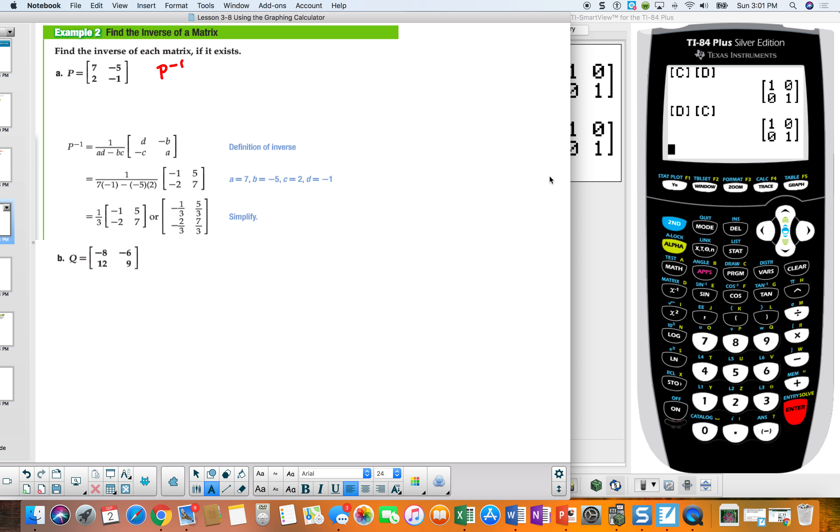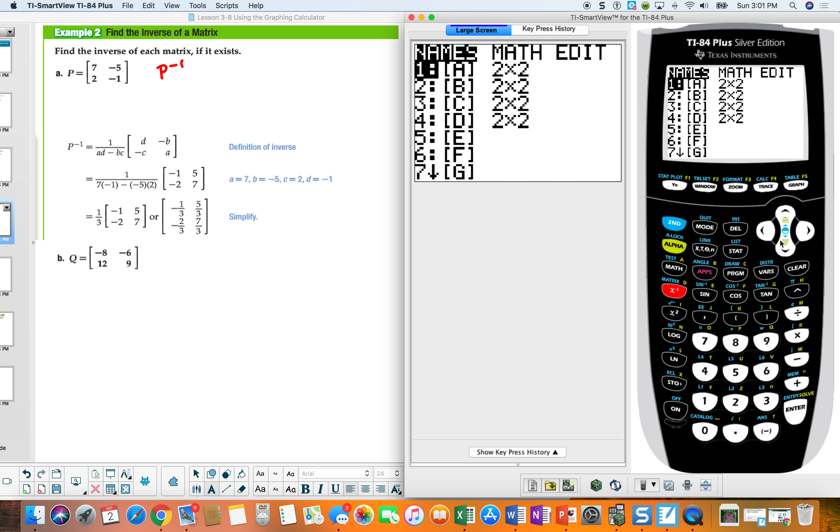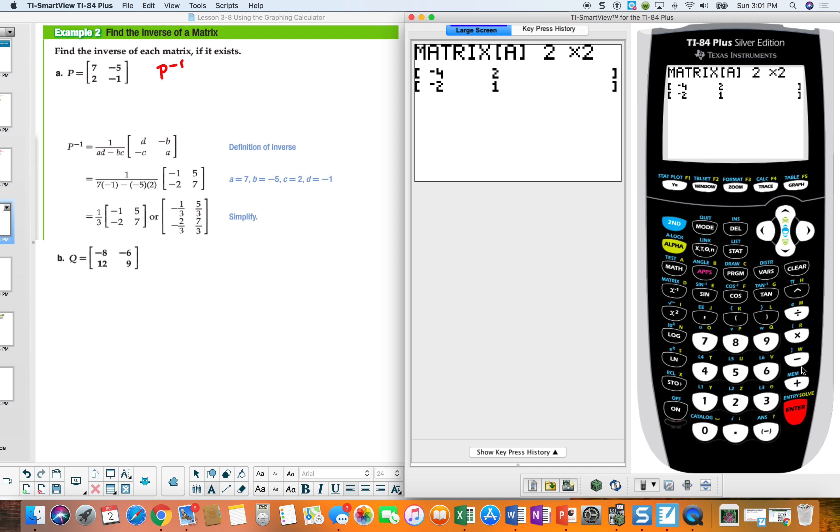Alright, let's go ahead and see if we can find a matrix. So I'm going to do second matrix. I'm going to go back to A, and I'm going to enter. And it's 7, enter, negative 5, enter, 2, enter, negative 1. Okay, and I'm going to do second quit.